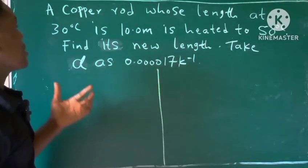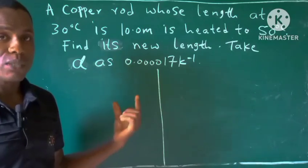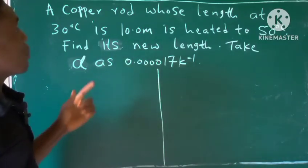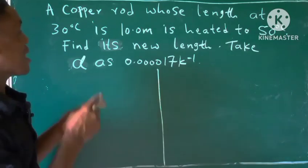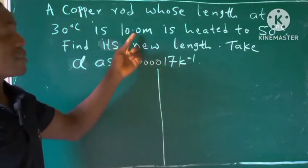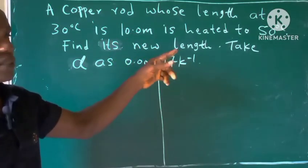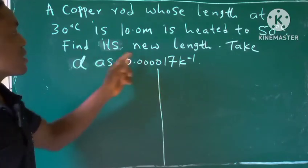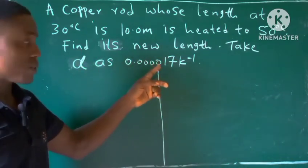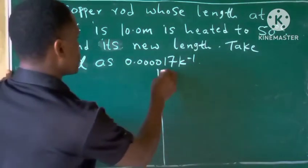Welcome back to my channel. This equation is from heat energy in physics under linear expansivity. Let's read that equation: A copper rod whose length at 30 degrees Celsius is 10.0 meters is heated to 50 degrees Celsius. Find its new length. Take linear expansivity as 0.000017 kelvin inverse. Okay, so solution.